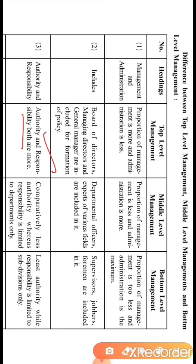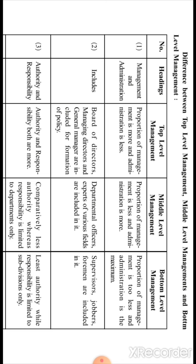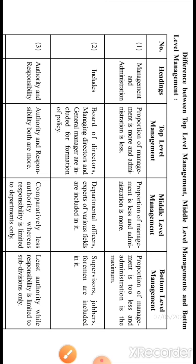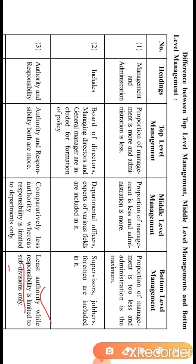Continuing on authority and responsibility: at the middle level management, authority is comparatively less than the top level. They have power within their respective department only — for example, a production manager has power to take decisions for his department. Their responsibility is also limited to their respective department only. At the bottom level management, authority is least — they don't have power — while responsibility is also limited to their subdivision only.